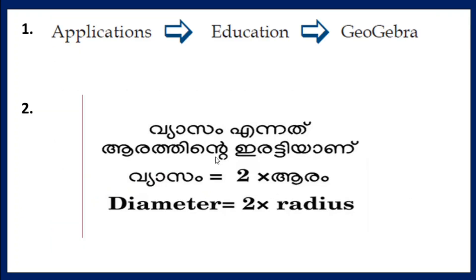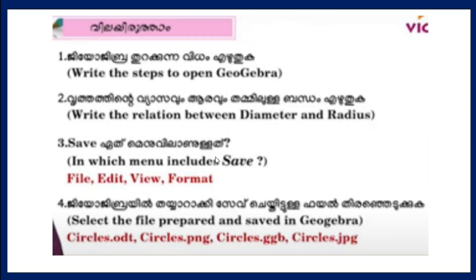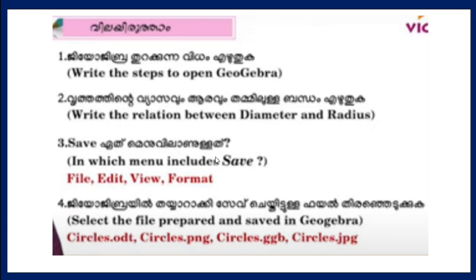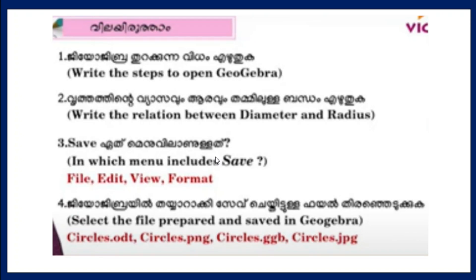First question — to open GeoGebra: Applications → Education → GeoGebra. Second question — the relation: diameter equals 2 times radius. Third — save is in the File menu. If you want to save the file in GeoGebra, you can use the .ggb extension.